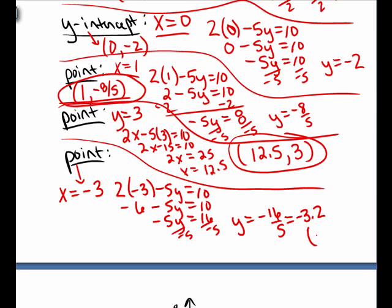Now we could go ahead and write that as negative 3.2. So, another point on the line. X is negative 3. Y is negative 3.2.